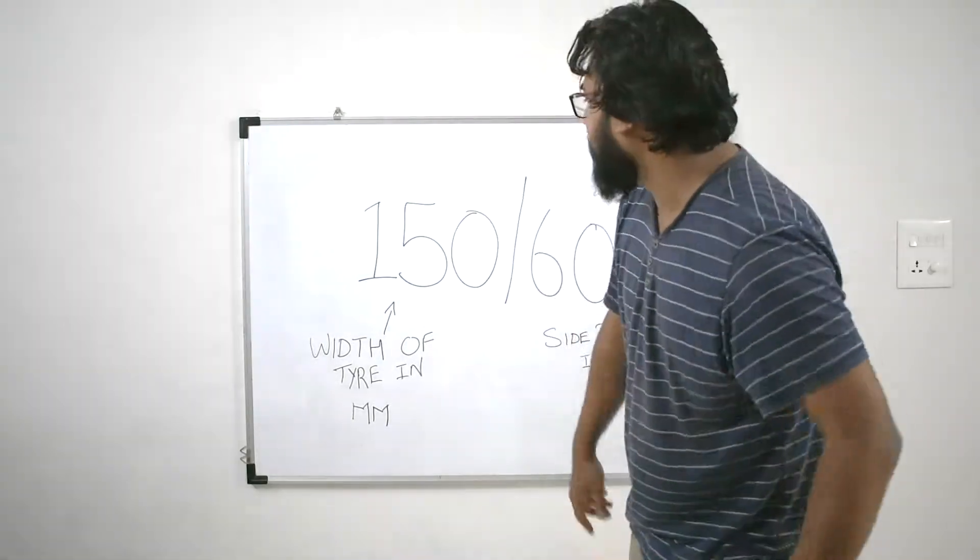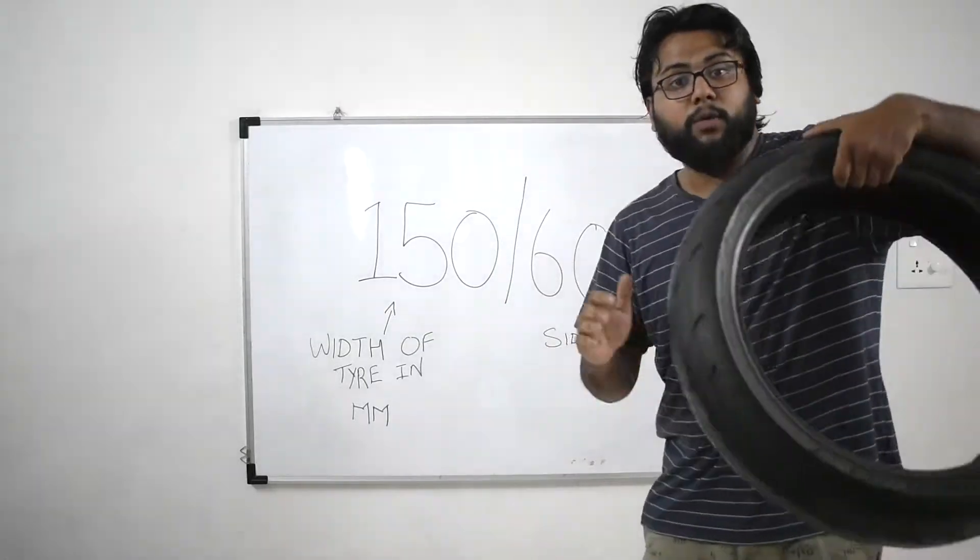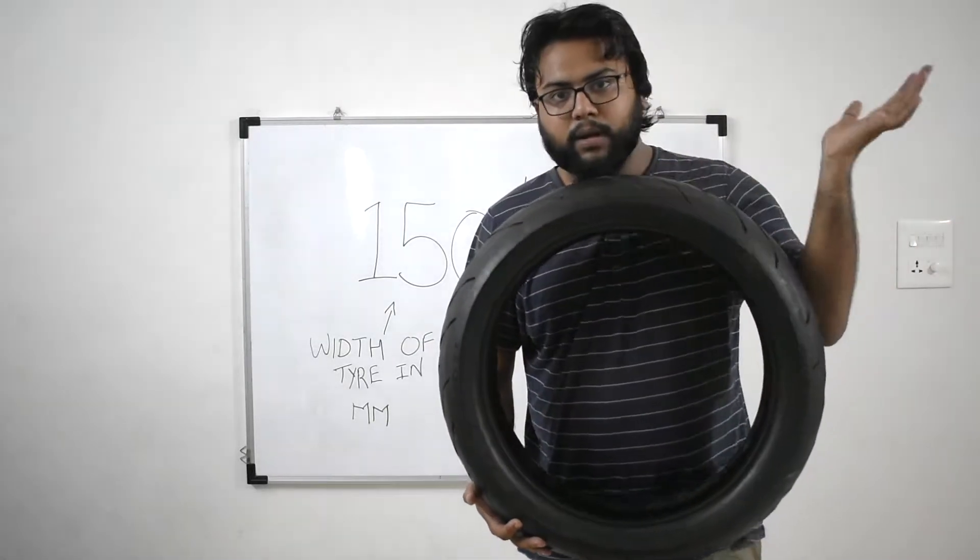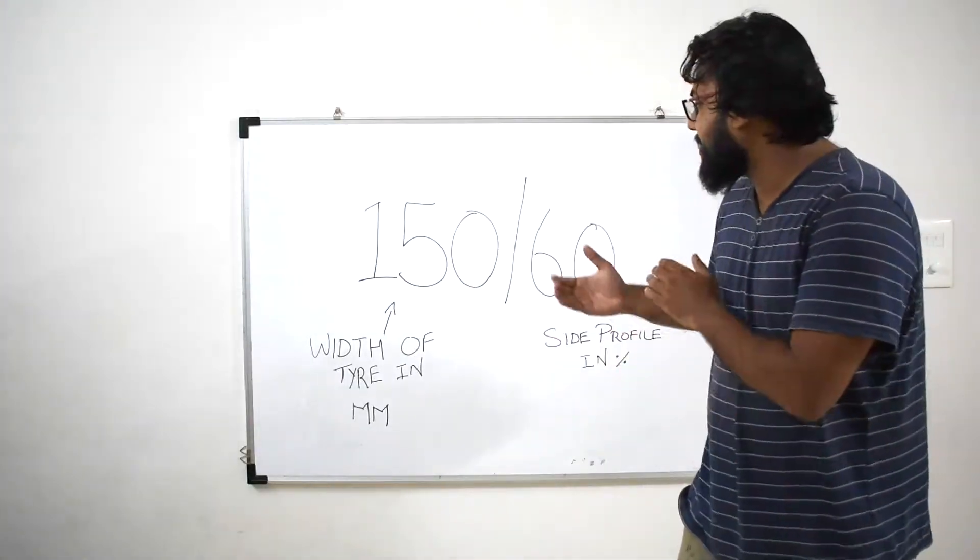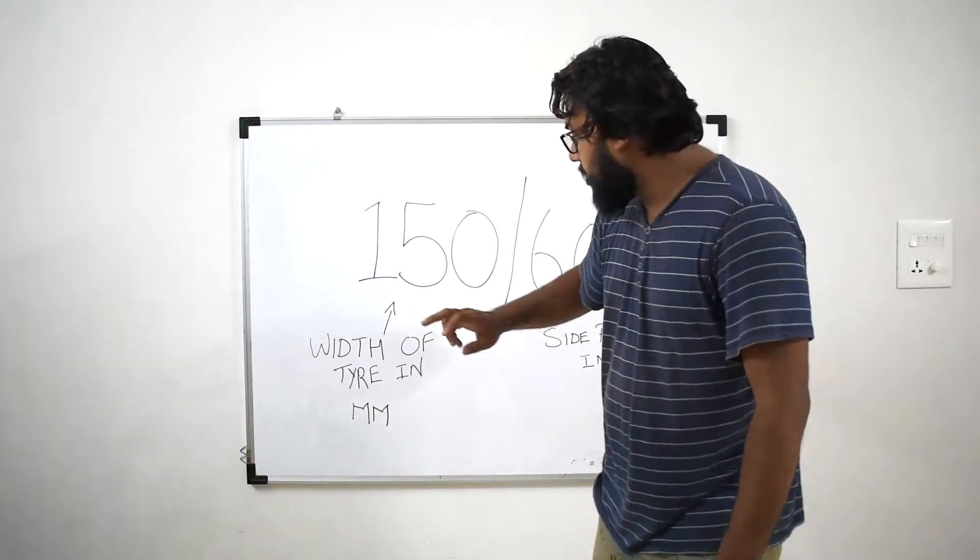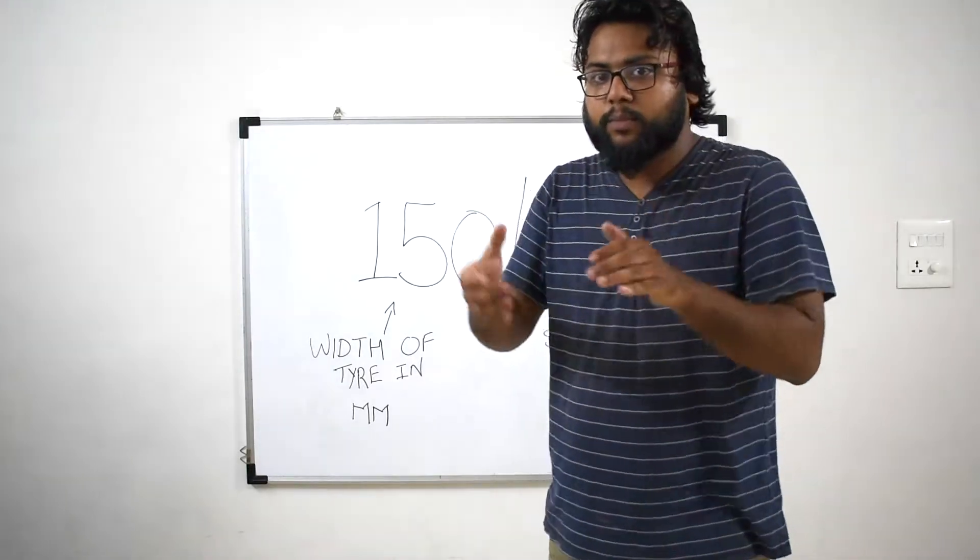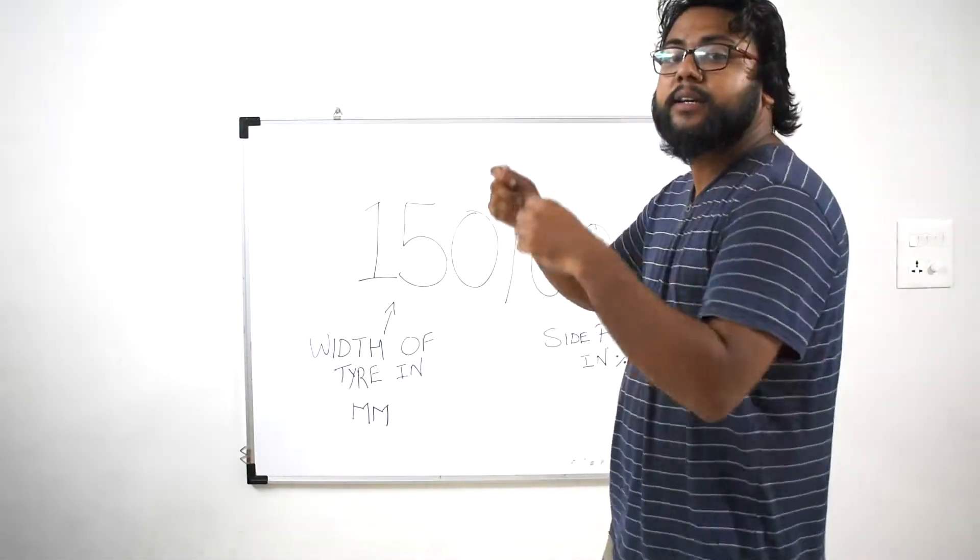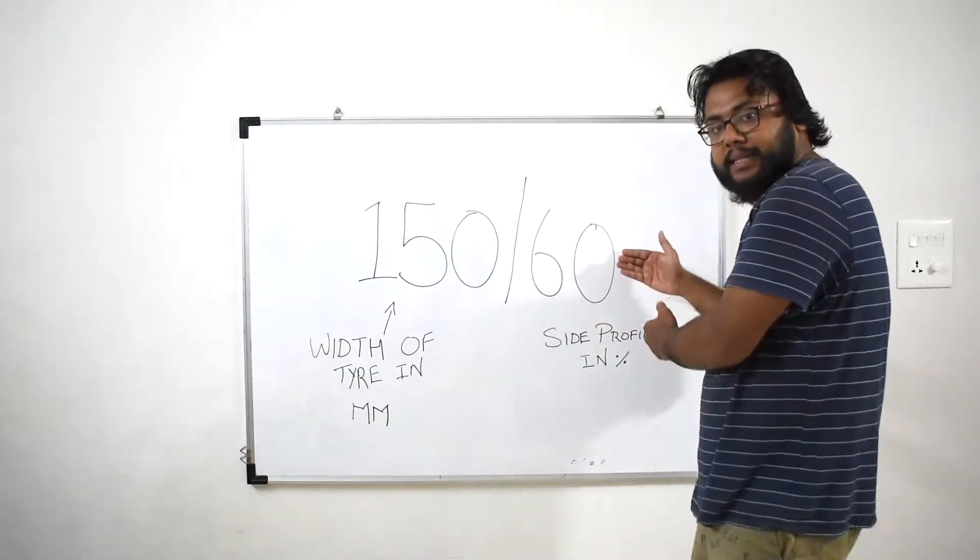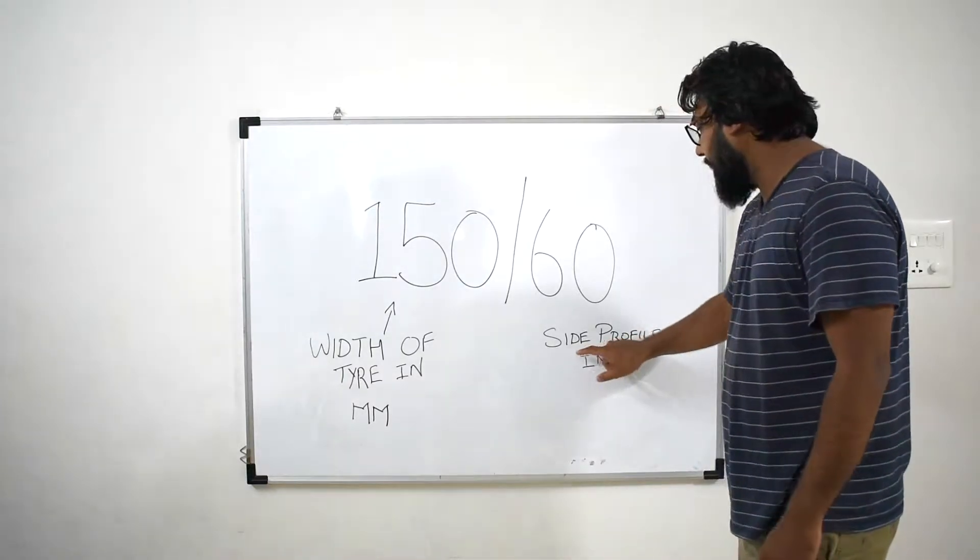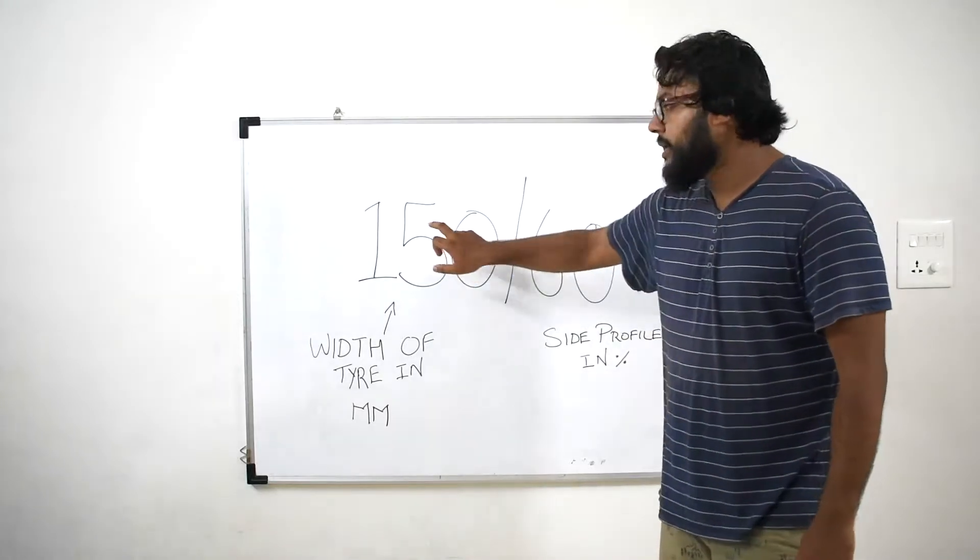The first number is 150 by 60, which is on every tire. We'll take my Borelli for example. The 150 is the width of the tire in millimeters, the profile of our front. And the next number is by 60. This is side profile in percentage. Basically 60%.